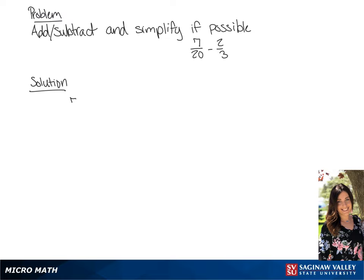We have 7 over 20 minus 2 thirds. We want to find the lowest common denominator. We will find that to be 60, so we're going to multiply the first fraction by 3 over 3, and the second by 20 over 20,